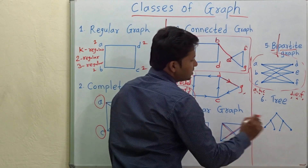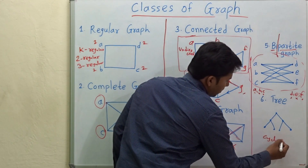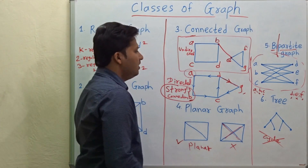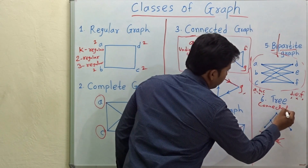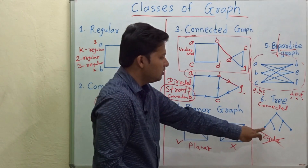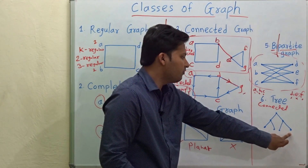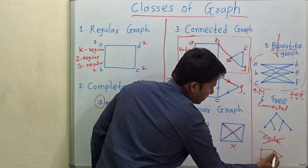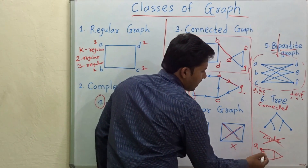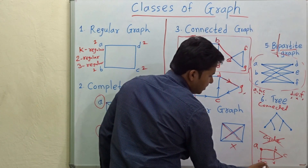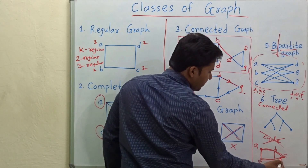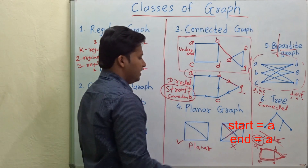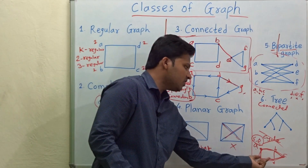Now let's look at tree. A tree is a connected graph with no cycle. You can reach from any vertex to any other vertex, but there is no cycle. A cycle means if you start from vertex A, go to B, then C, D, E, and return to A — starting and ending at the same vertex. That is a cycle. Graphs that contain such cycles are called cycle graphs.